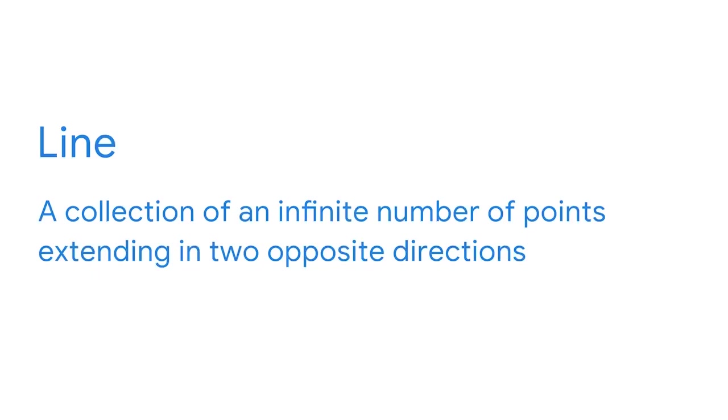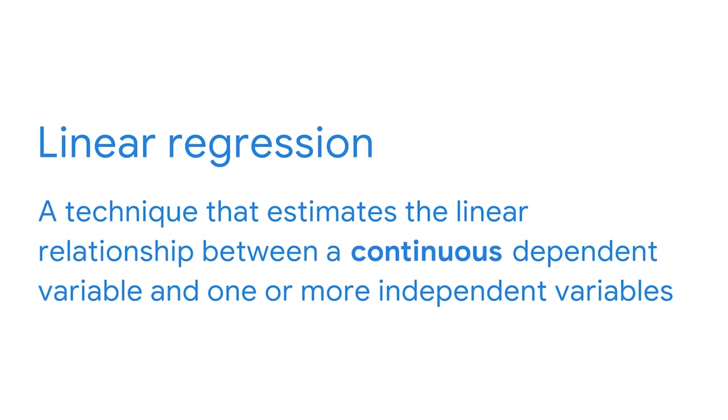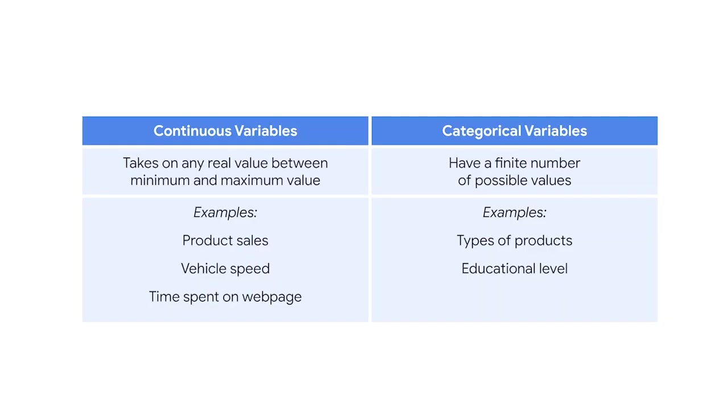A line is a collection of an infinite number of points extending in two opposite directions. Linear regression is a technique that estimates the linear relationship between a continuous dependent variable, Y, and one or more independent variables, X. For example, we could model the relationship between the prices of a product and the number of sales. Our Y variable would be the number of sales, and our X variable would be the prices. In an earlier course, you learned the difference between continuous and categorical variables.